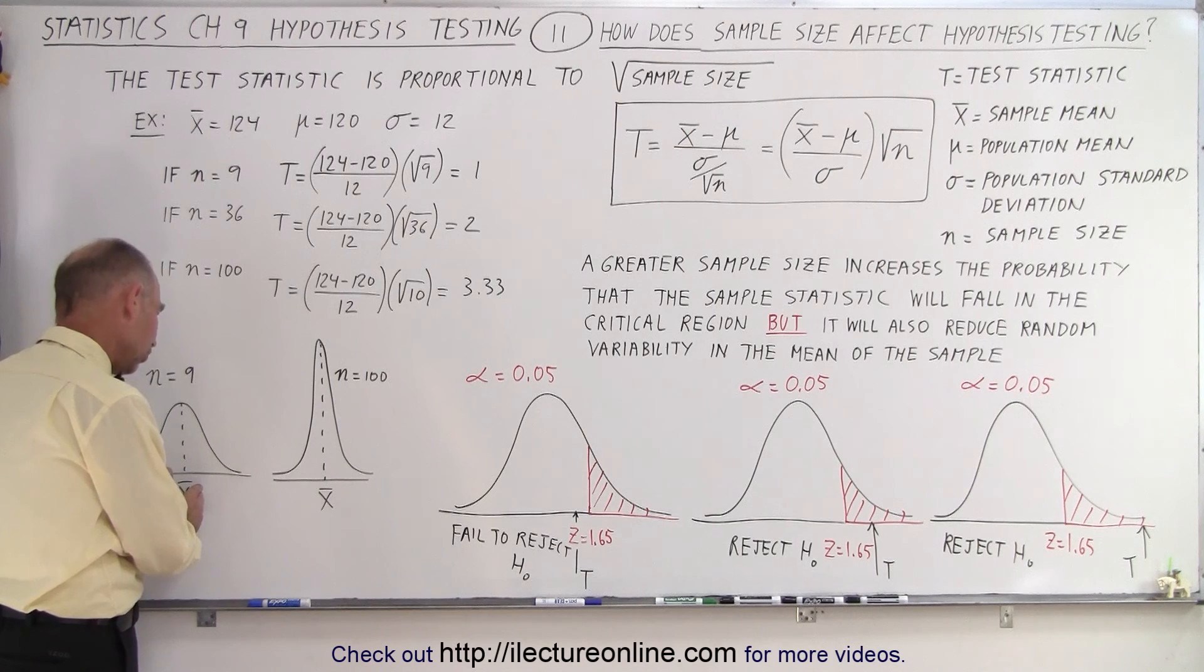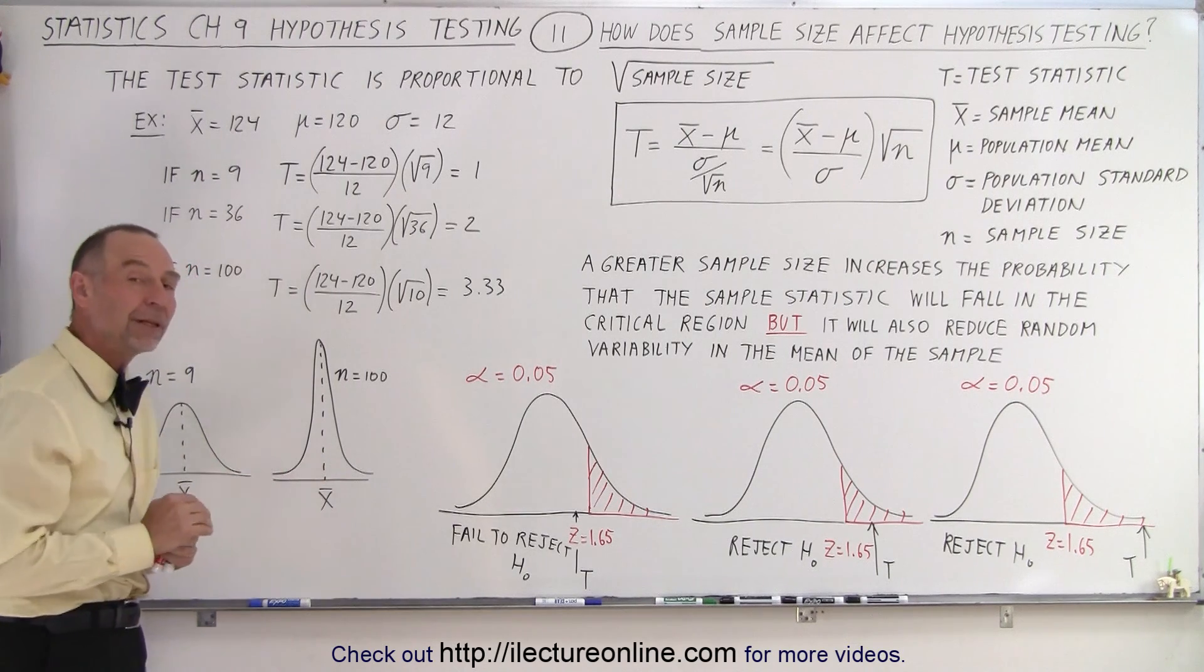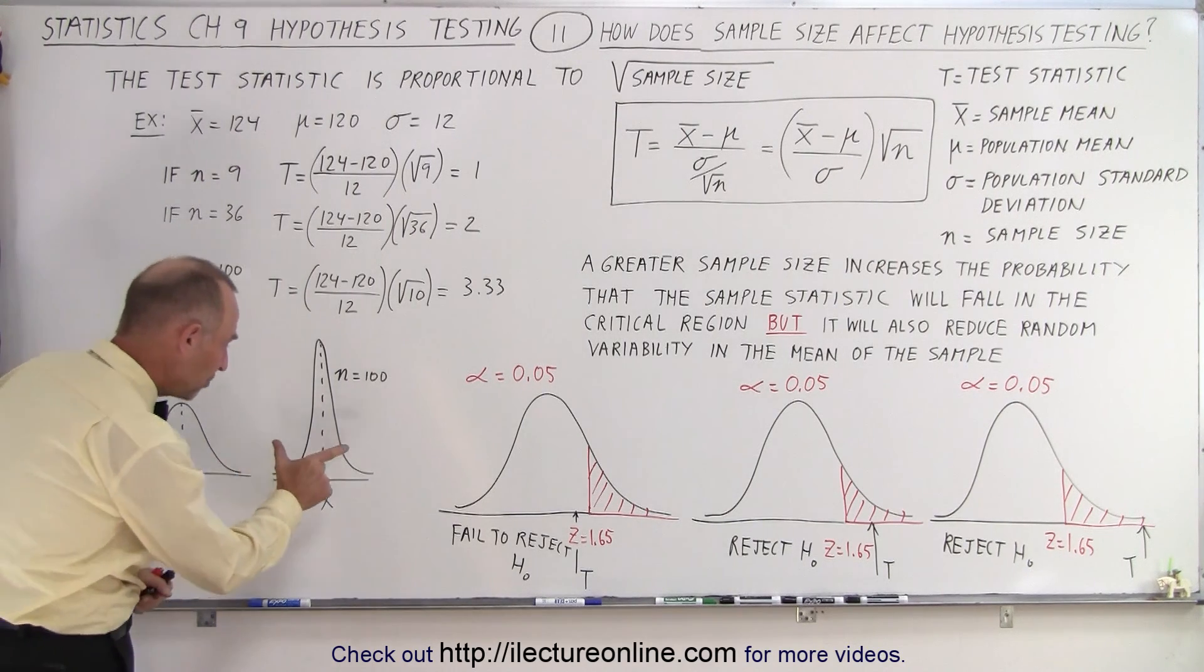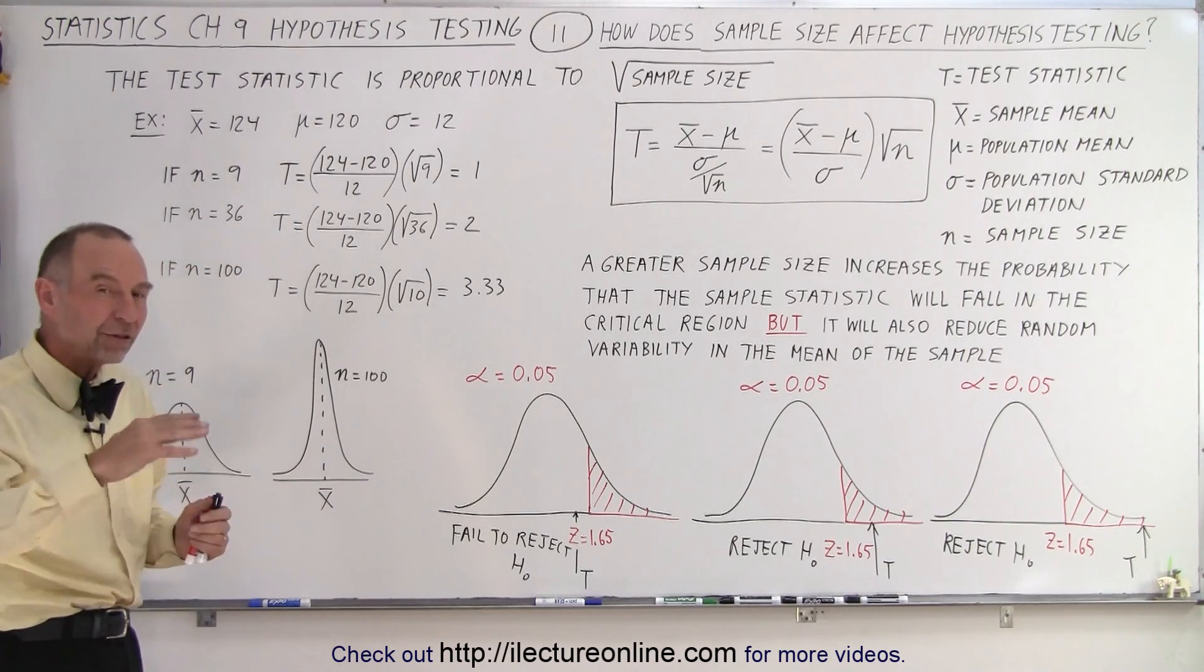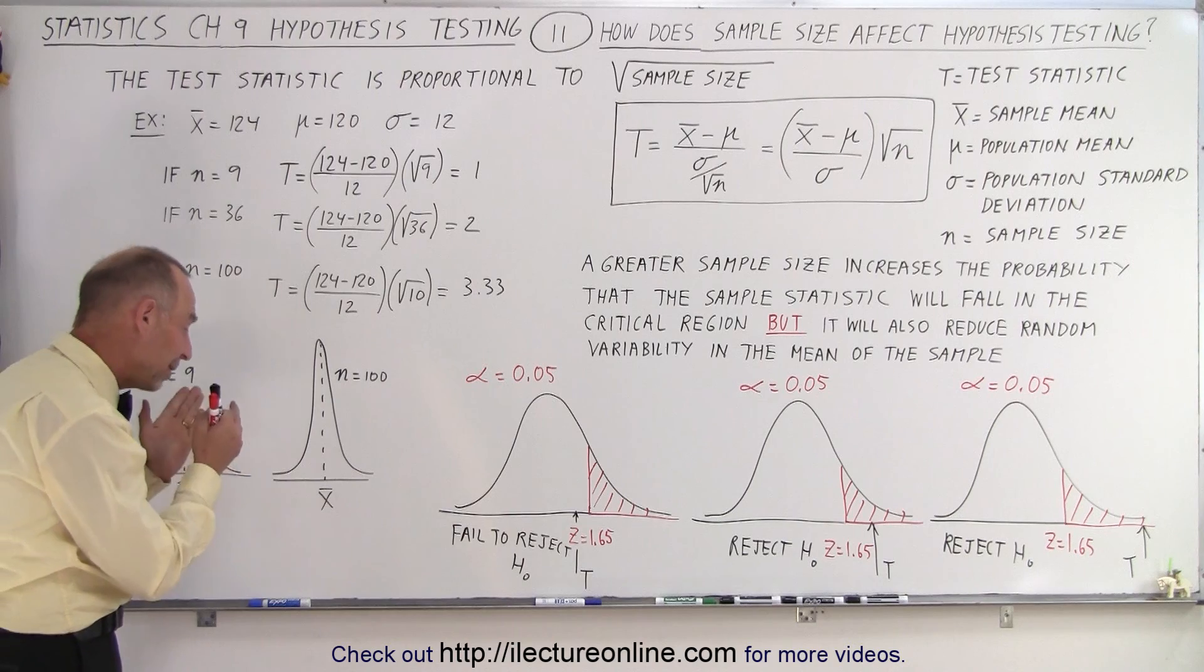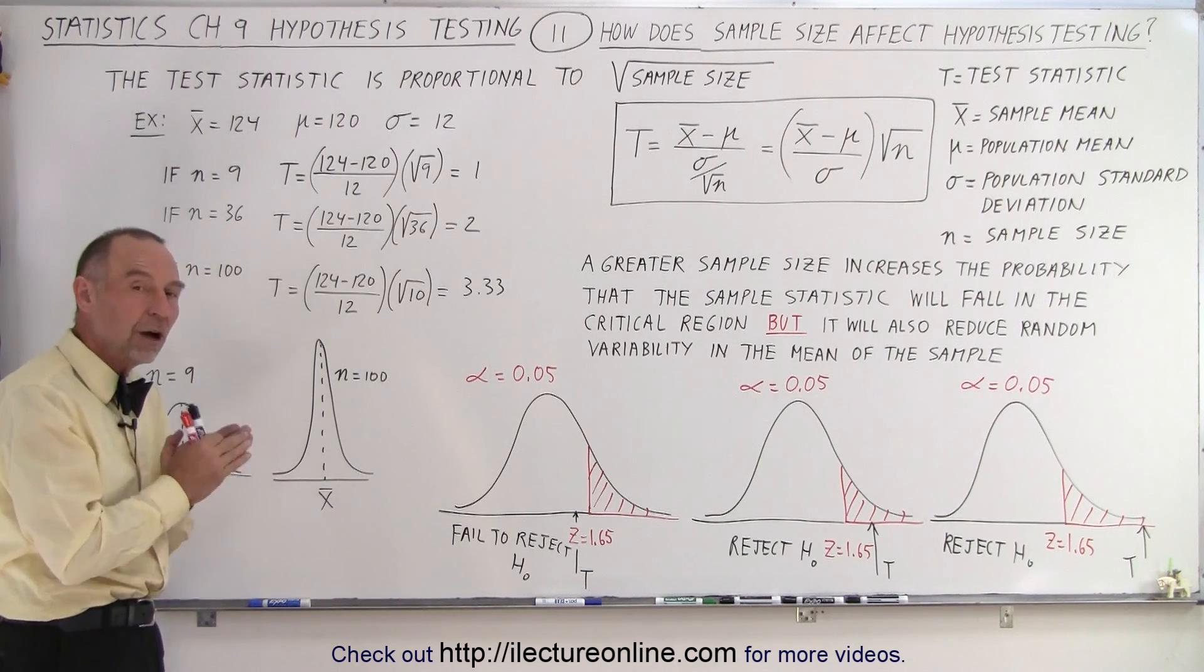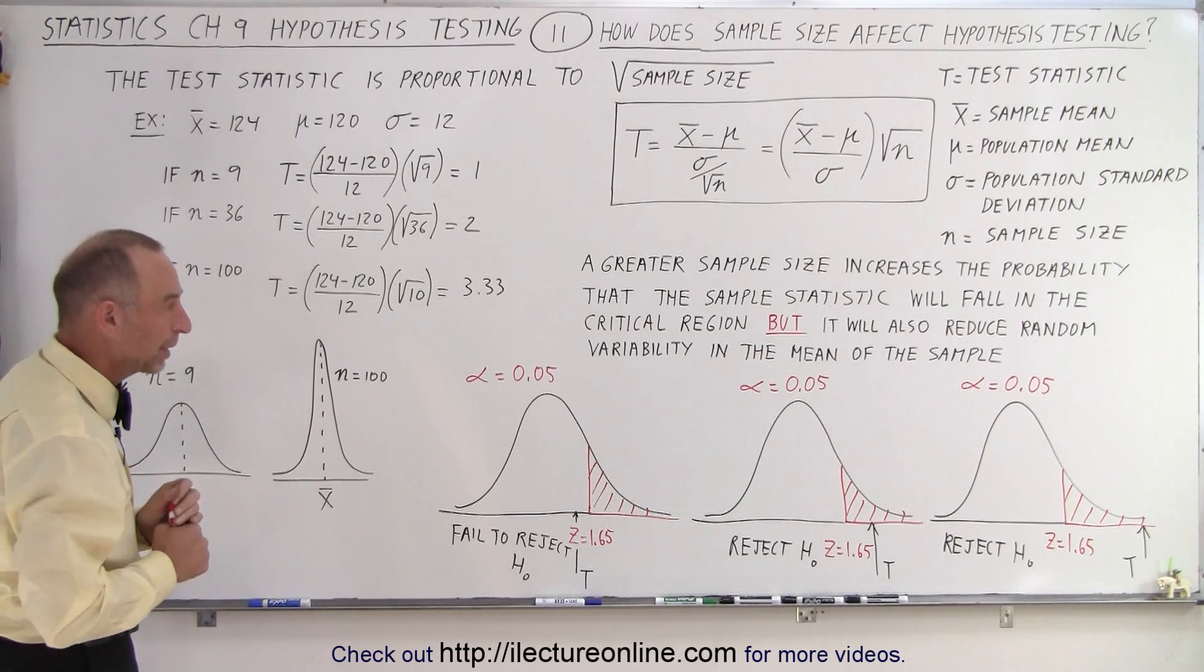More variability in small samples, less variability in large samples, which means it narrows the distribution of the values of your sample and it will be a more accurate reflection of the overall population.